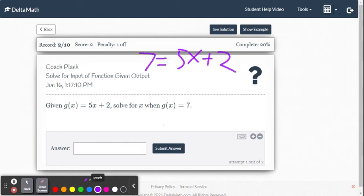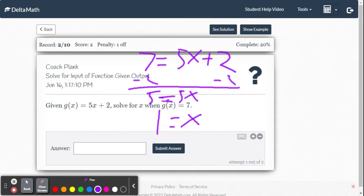Now we're going to solve this equation. We're going to subtract 2 from both sides and we get 5 equals 5x. Then we divide both sides by 5. So we're going to get x is equal to 1.